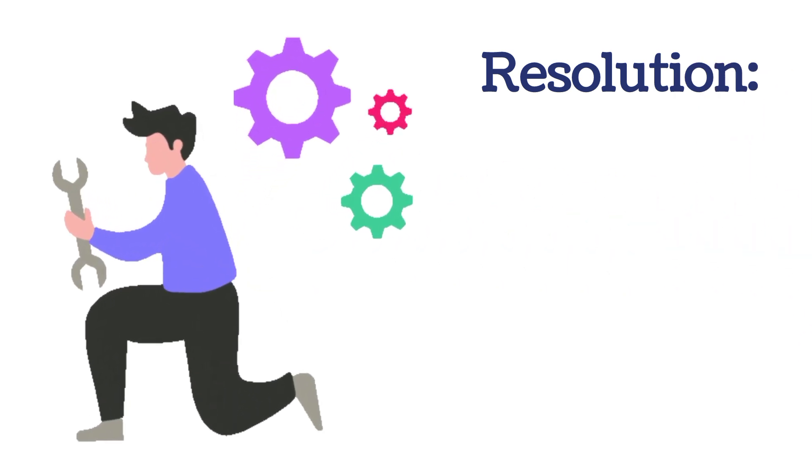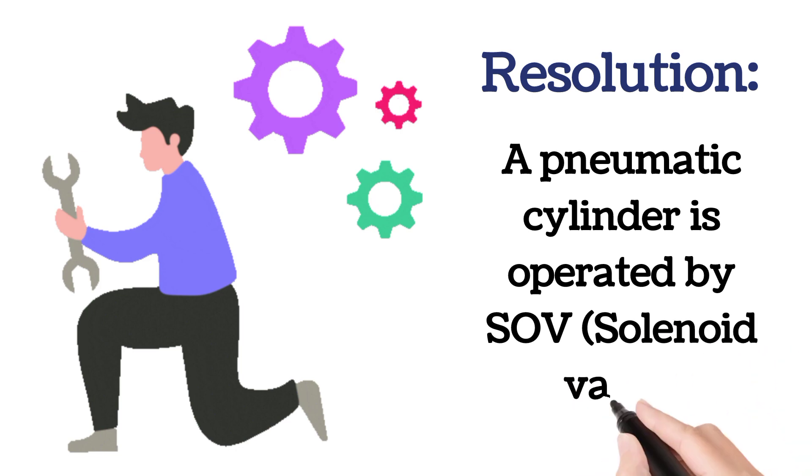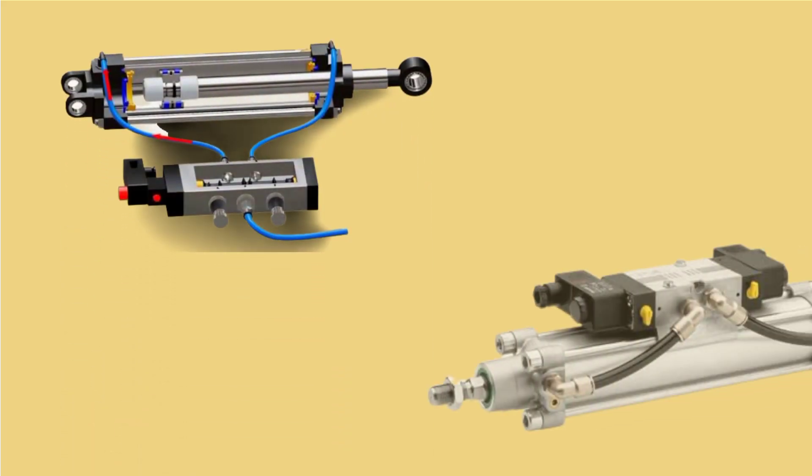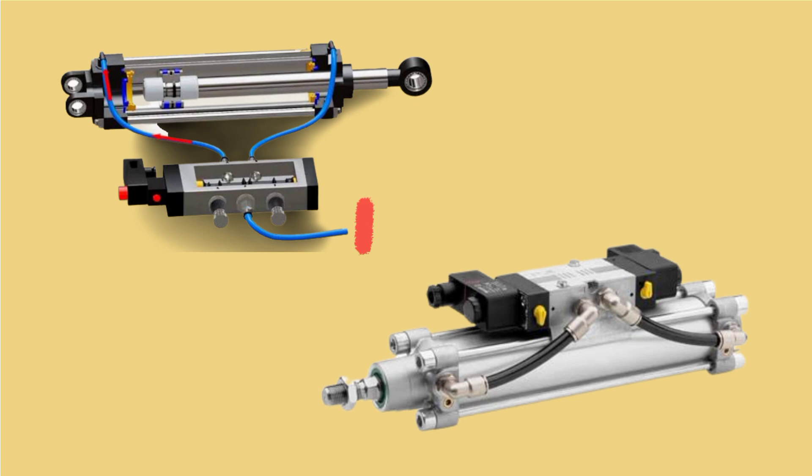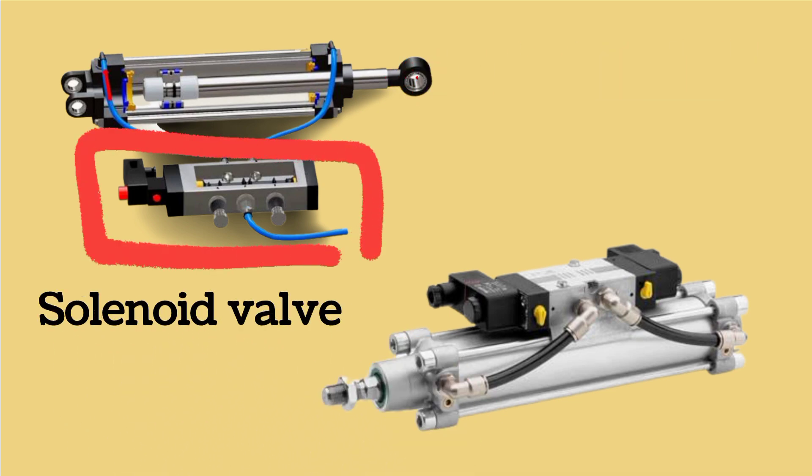A pneumatic cylinder is operated by SOV or solenoid valve. Solenoid valve is the full form of SOV. In this image, solenoid valve and pneumatic cylinder are shown. Solenoid valve is shown by the rectangle. Pneumatic cylinder is shown by the arrow.